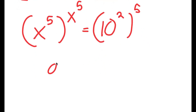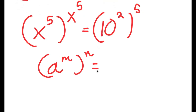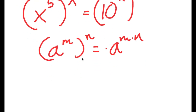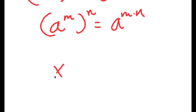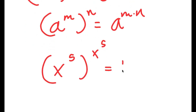Again, if I have something in the form a to the power of m to the power of n, this is equal to a to the power of m times n. So 10 to the power of 2 to the power of 5 equals 10 to the power of 2 times 5, and 2 times 5 is equal to 10.